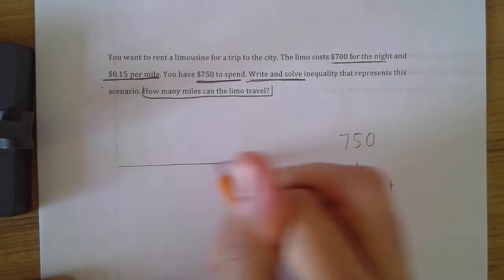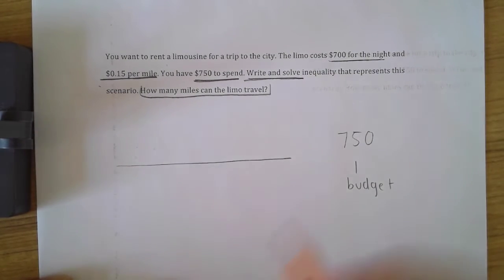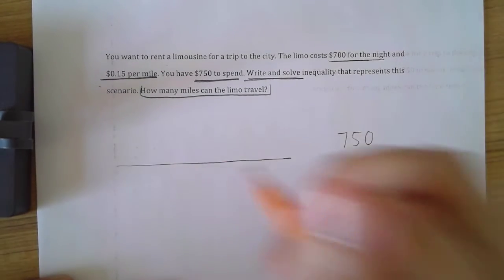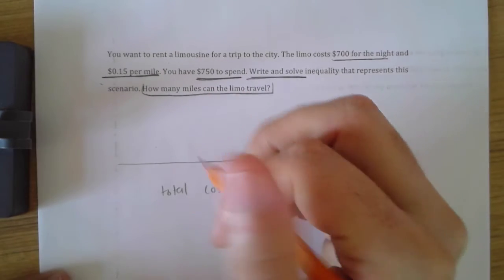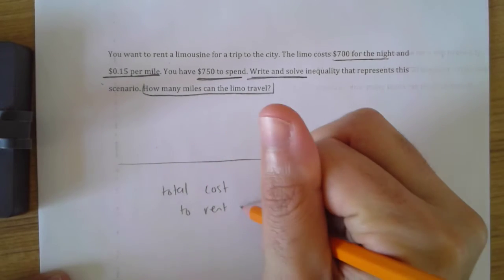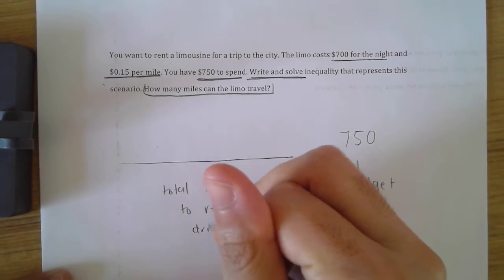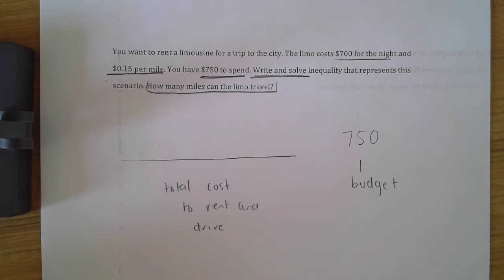Whatever's on this side of my inequality, this must represent the total cost to rent and drive, right? Because there's a couple of different ways that my cost is getting calculated, but whatever the total cost is...